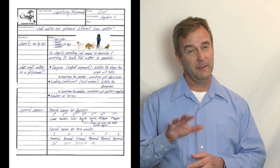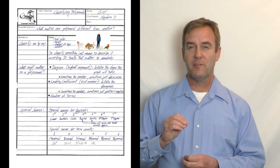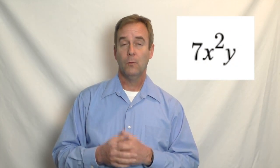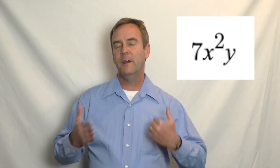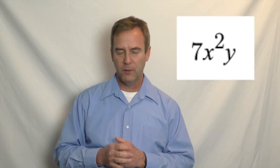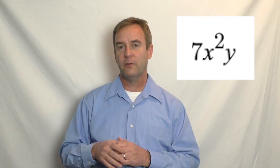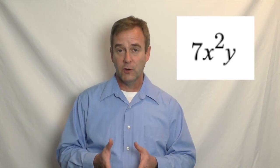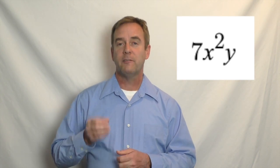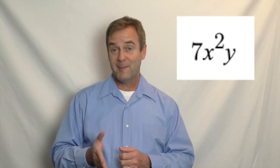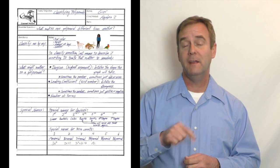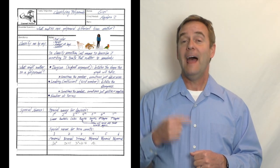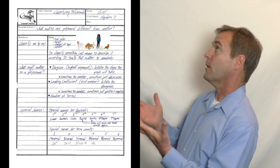The first is its degree. The easy definition for degree is the highest exponent you see, but it's a little more complicated when an expression has more than one variable. For example, a monomial with both an x squared and a y to the first power — you add those together, giving a degree of three. That's the only time we have to add variables together.